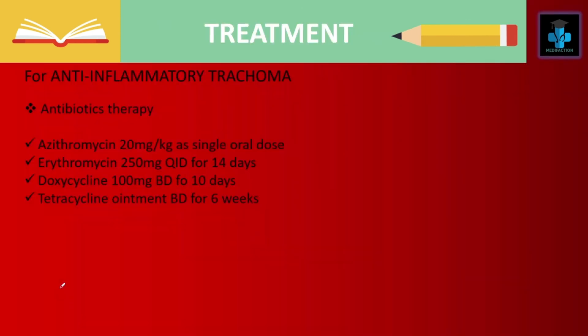Now let's see the treatment. In case of active inflammatory trachoma, we can use antibiotics such as: Azithromycin 20 mg per kilogram as a single oral dose; Erythromycin 250 mg four times a day for 14 days; Doxycycline 100 mg twice a day for 10 days; and Tetracycline ointment can also be given twice a day for 6 weeks.